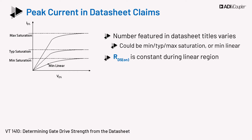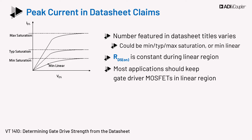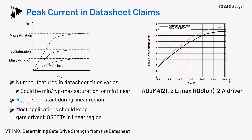RDS-on of the MOSFET is almost constant while in the linear region, and most applications should keep gate driver MOSFETs in the linear region. The example peak current of one of ADI's parts is shown in the figure to the right — this part is rated as a 2-amp driver, since ADI rates gate drivers with the minimum linear region current. For this measurement, an external series resistor of 2 ohms is used, in line with how the part will be used in the application. A different series resistor in an application will yield a different peak current.